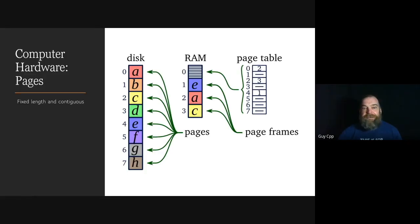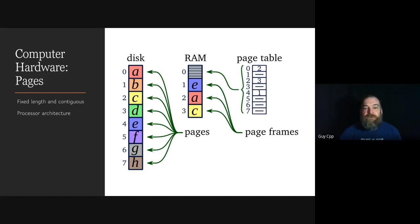A page is a fixed-length contiguous block of virtual memory described by a single entry in the page table — the smallest unit of data for memory management. A page frame is the smallest fixed-length contiguous block of physical memory into which memory pages are mapped by the OS. Page size is usually determined by the processor architecture. Traditionally pages had uniform size, such as 4096 bytes. A system with a smaller page size uses more pages, requiring a larger page table. For example, with a 32-bit virtual address space and 4096-byte pages, you get 2^20 — about a million virtual pages — whereas increasing page size to 32K reduces this to about 100,000 pages.